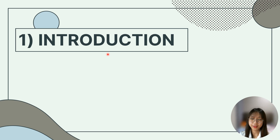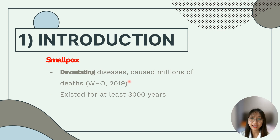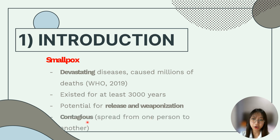Let me start with the introduction. Smallpox is one of the most devastating diseases known to humanity and caused billions of deaths before it was eradicated. It is believed to have existed for at least 3,000 years. It remains of clinical concern because of the potential for release and weaponization. It was contagious, meaning it can spread from one person to another.